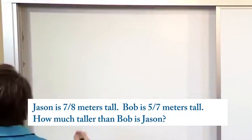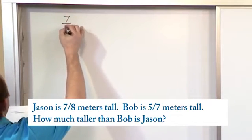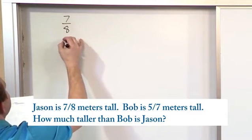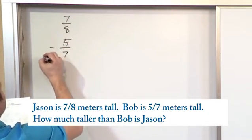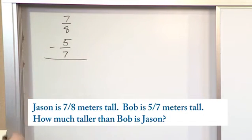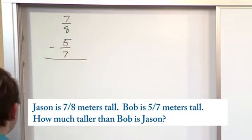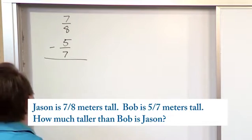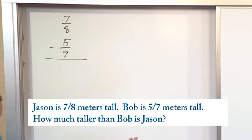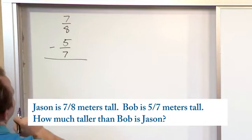So Jason is 7 eighths of a meter, and Bob is 5 sevenths. And we need to subtract these guys like this. Now we do not have a common denominator here, so we need to do that ourself. I'm coming up blank on what a great common denominator would be, so I go back to my fallback.